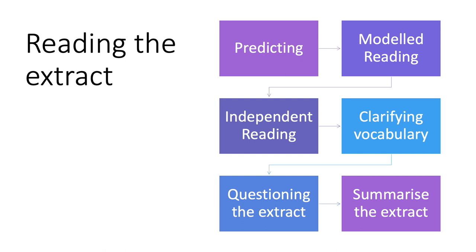Then read through it. Are there any words you're unfamiliar with? Can you figure them out from the sentence? Make a guess about what they might mean based on what's happening around them. Start questioning the extract: who are the characters, how do they know each other, who is talking? Make sure you understand and are following the plot. At the end, just write one sentence to sum it up — 'this extract is about...' Your summary should be really specific to that extract, not the same as the synopsis.